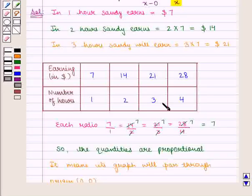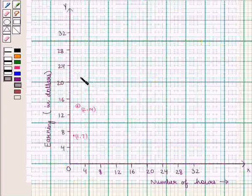Next, we'll plot the point (4,28) on the graph.